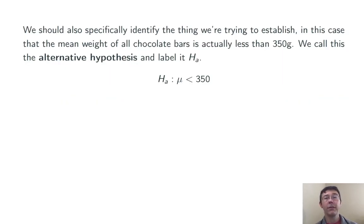Let's also give a name to the thing that we are trying to establish, the thing that we want evidence for. In this case, it's that the mean weight of all chocolate bars is actually less than 350 grams. We'll call this the alternative hypothesis and label it H sub A. In this case, H sub A is that mu is less than 350, that the mean weight of all the chocolate bars is less than 350 grams.